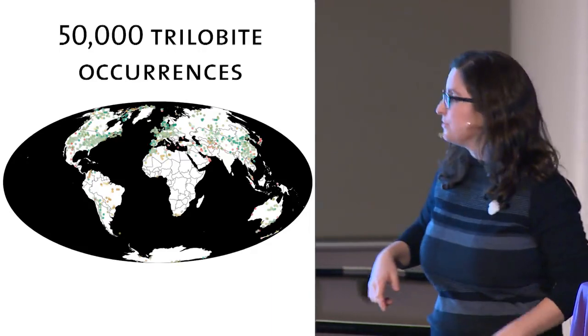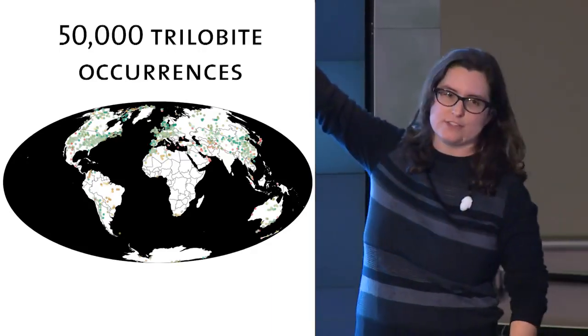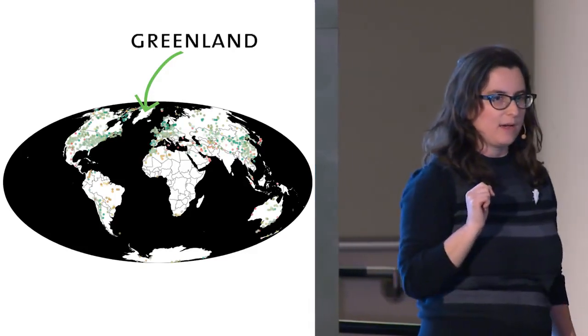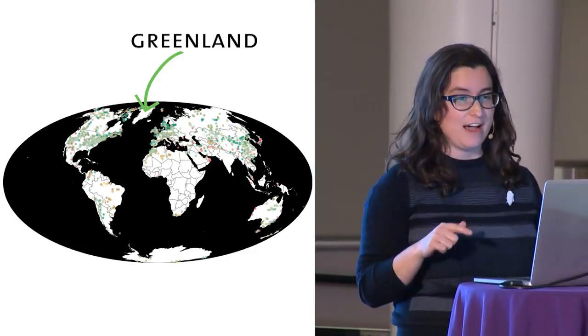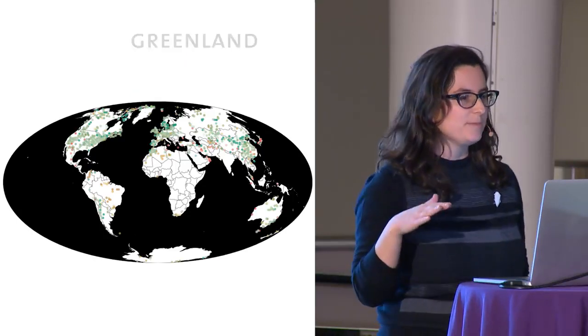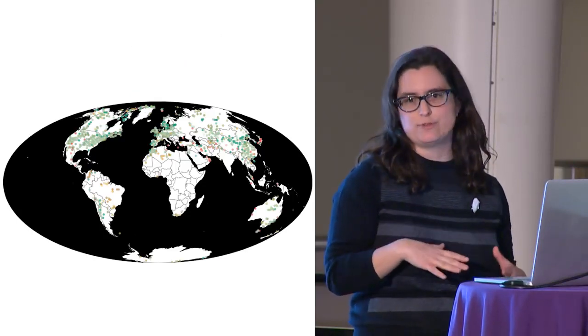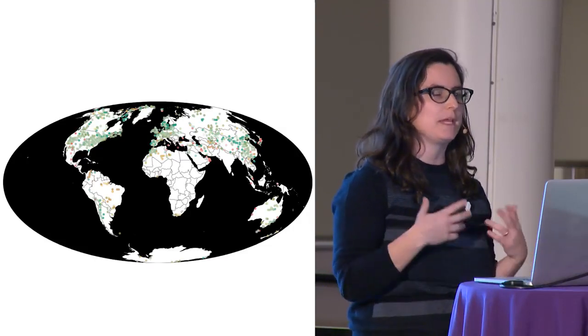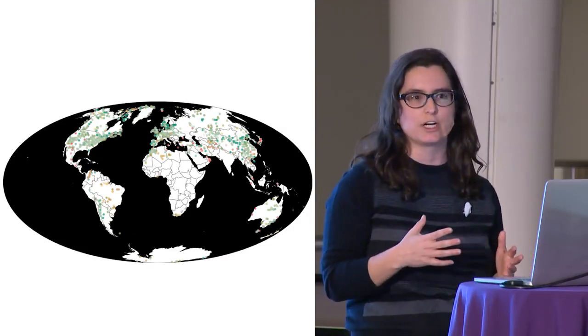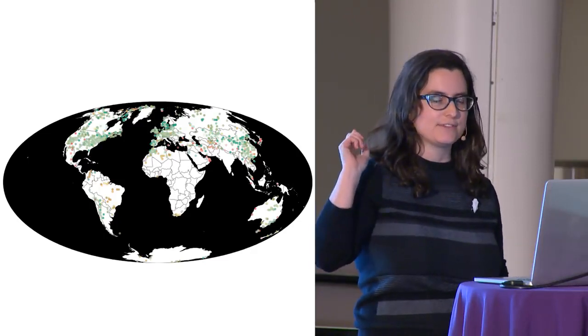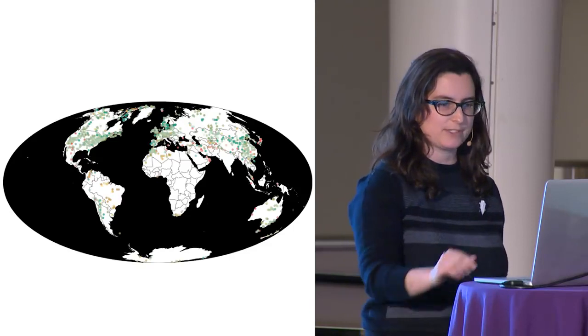Now, just because we find a trilobite fossil way up north in Greenland doesn't mean that when that particular trilobite was alive that it actually lived really near the poles. We know this because the continental plates have moved over time. But we can model that change and so we can make maps of where the continents were hundreds of millions of years ago. And then we can take these fossil occurrences and project them back onto those maps.